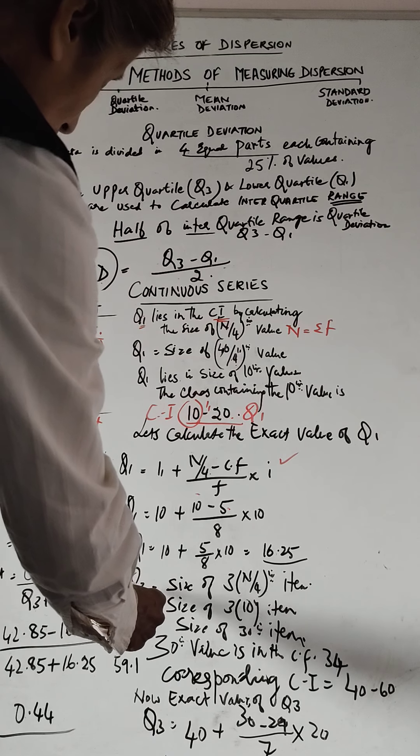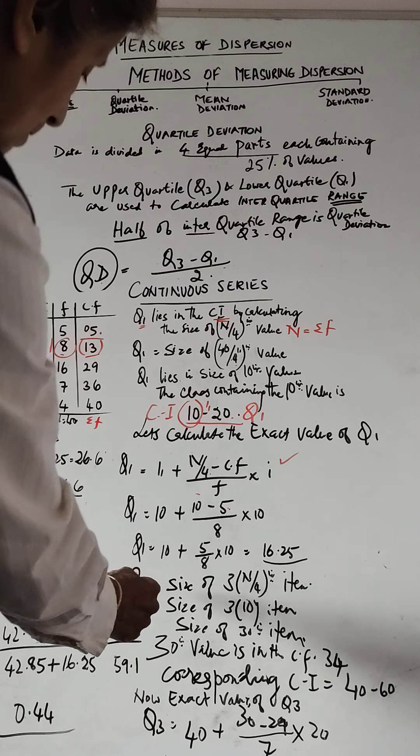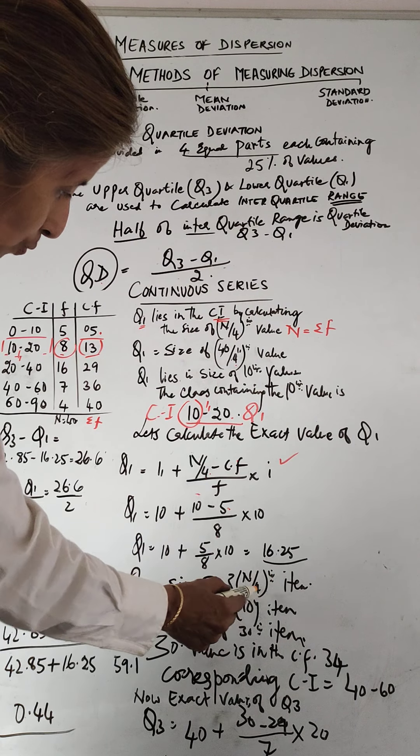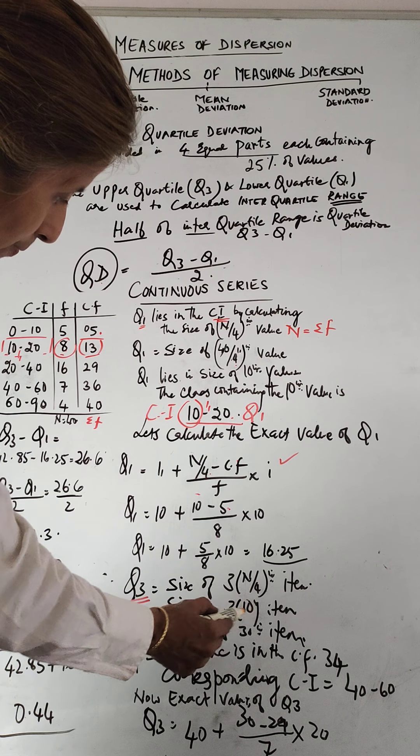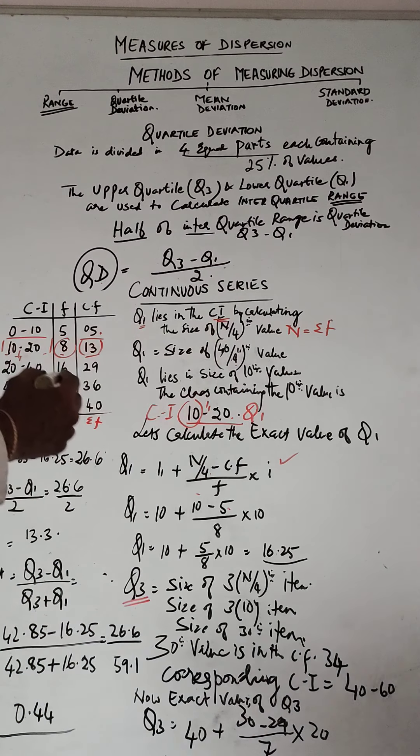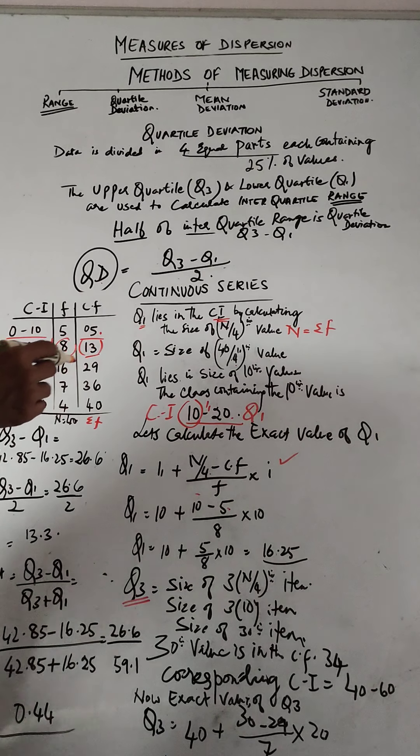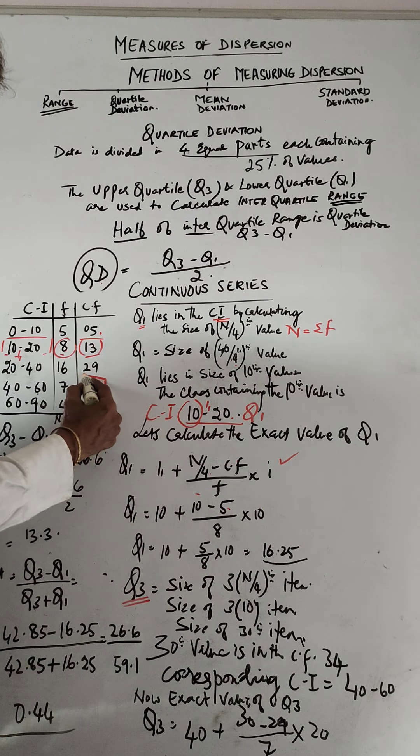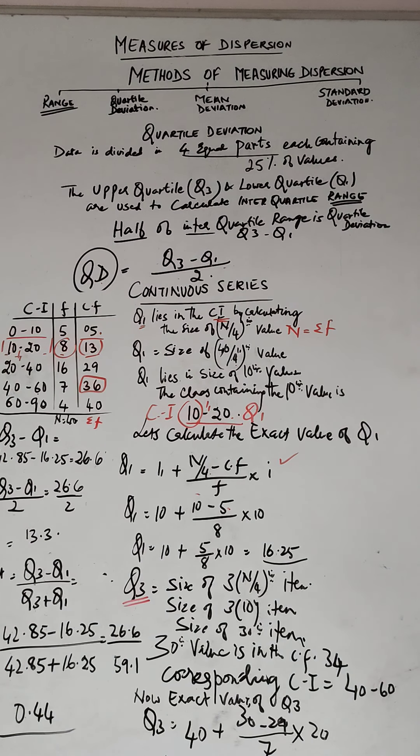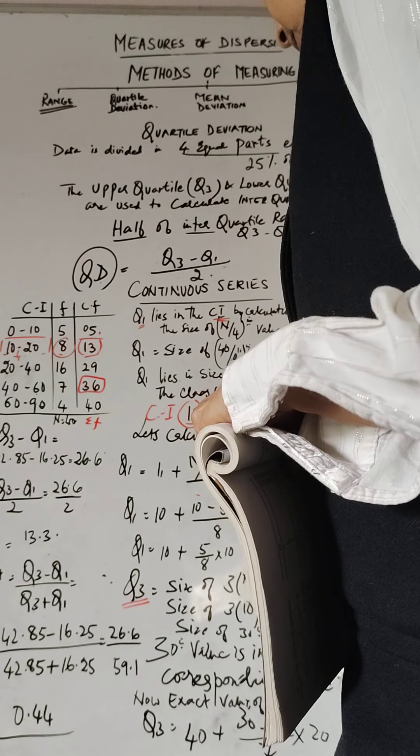Now let's find Q3. Wherein lies Q3? Size of 3 into n by 4th item. We know n divided by 4 is 10, so size of 3 into 10th item, the 30th item. Where is the 30th item? It lies in cumulative frequency 36. Now we've discovered which class interval Q3 lies in. The 30th value is in cumulative frequency 36.